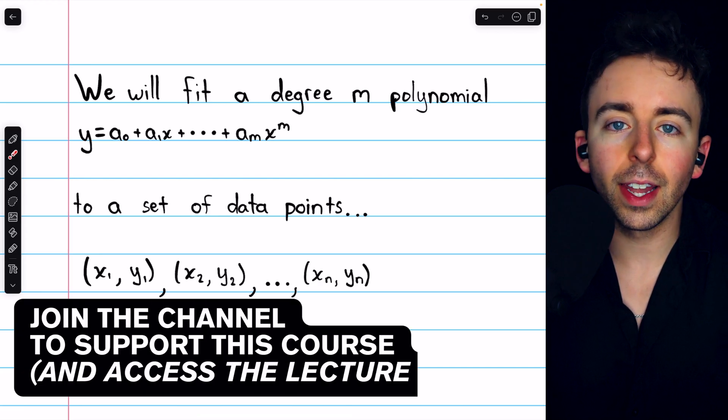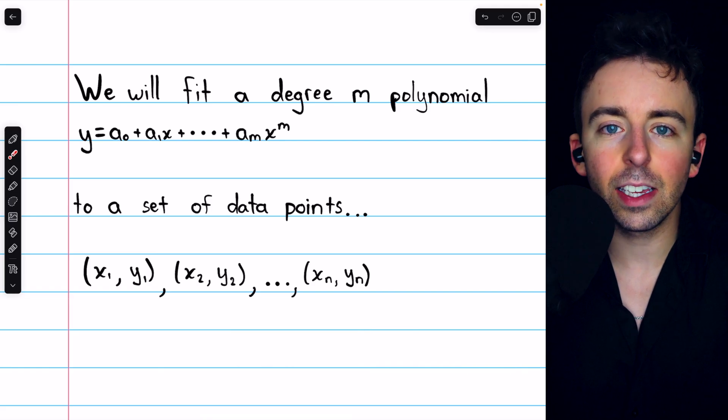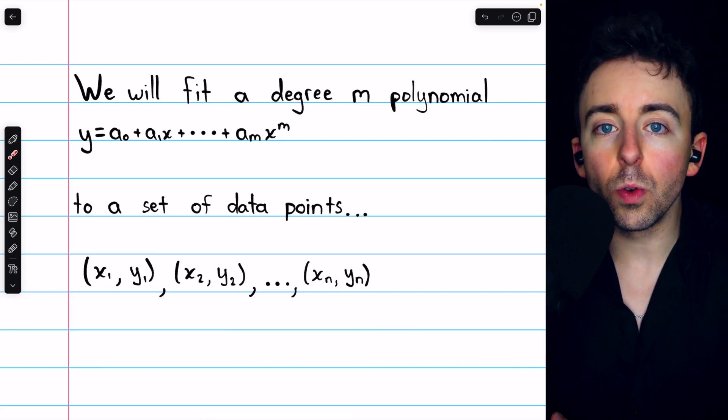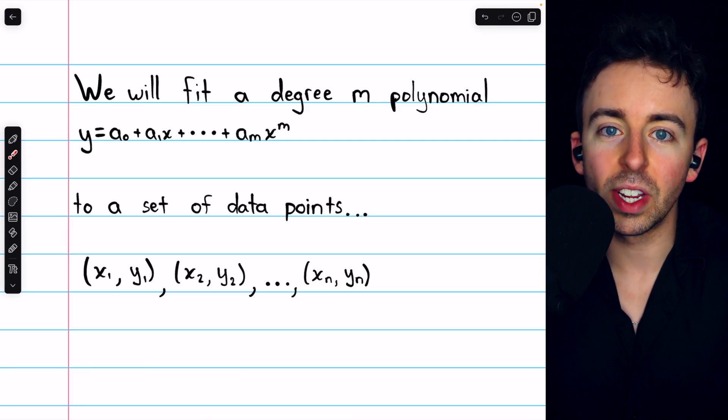We previously went over how to find the line of best fit for a set of data points that don't exactly fall on a line. We use what's called the normal equation. I'll leave a link in the description to the lesson where we go over that.